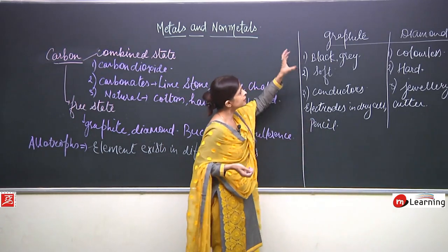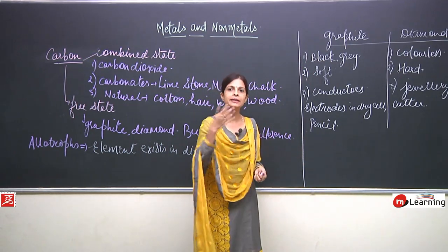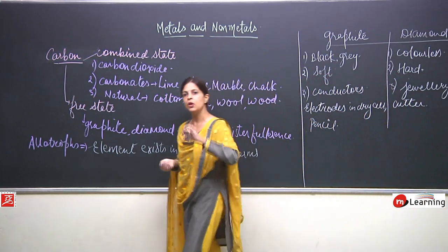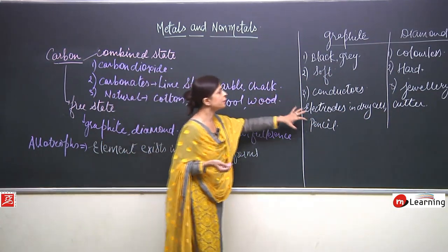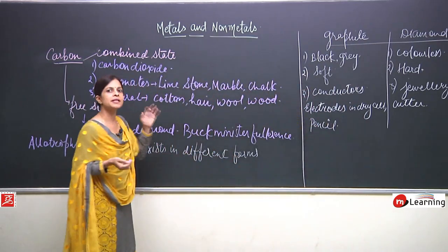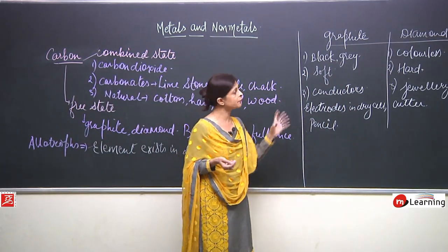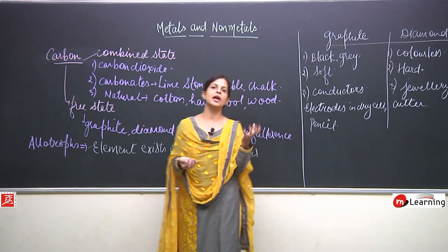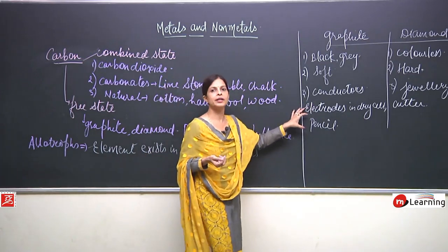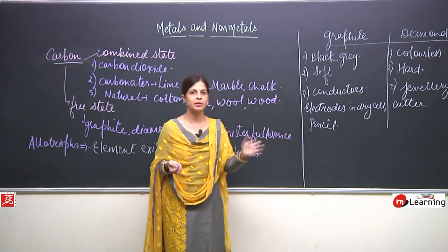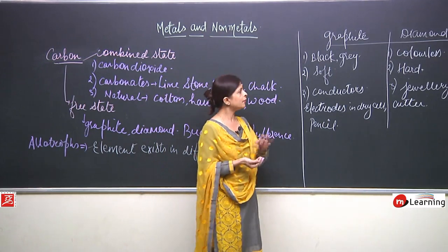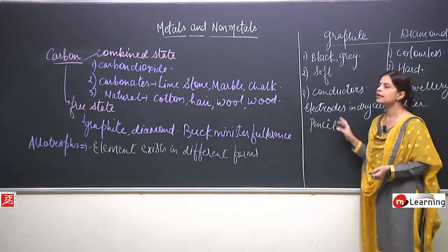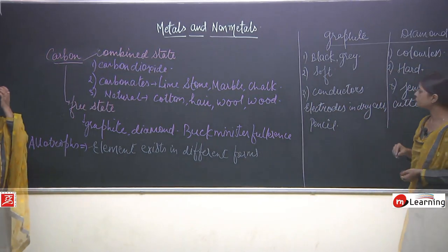If we burn both graphite and diamond in the presence of oxygen, both leave only carbon dioxide — nothing else. This proves that both are made entirely of carbon. Then why do they have such different physical properties? Because their structure and bonding is different, which we will study in higher classes. They have the same chemical properties because both are forms of carbon, but different physical properties because their structure differs.